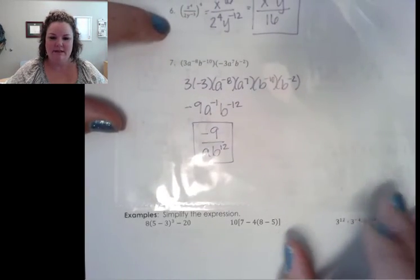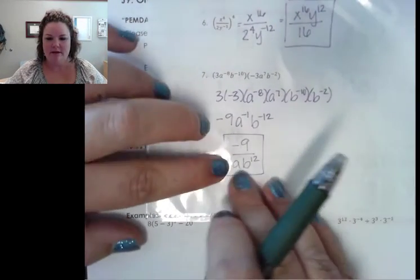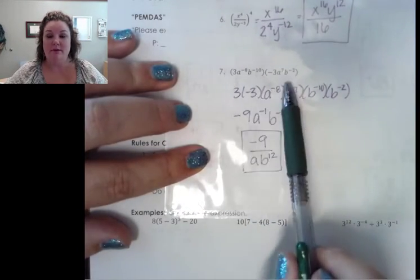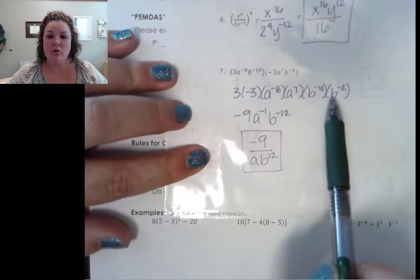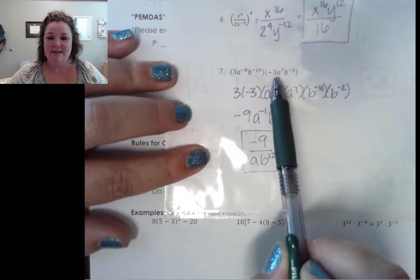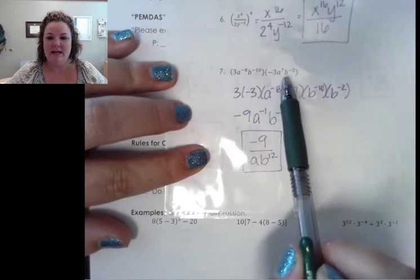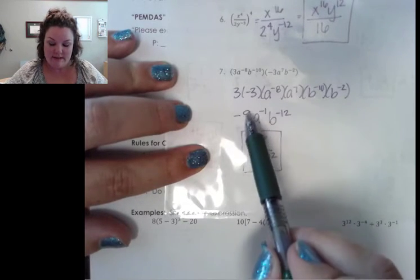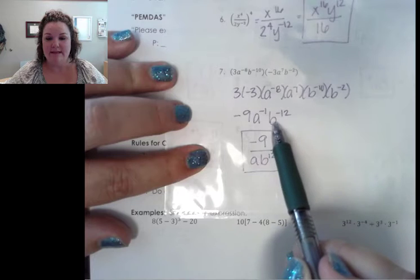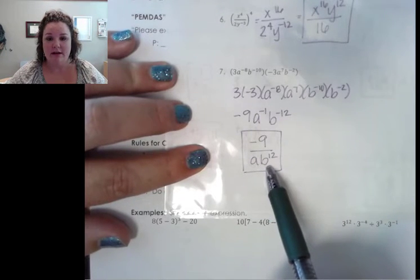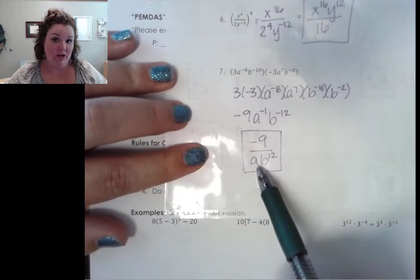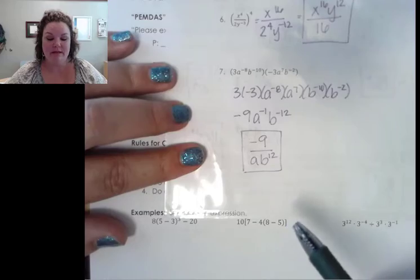Number 7: we just have two monomials being multiplied. 3 times negative 3 gives me negative 9. a to the negative 8th times a to the 7th leaves me with a to the negative 1. b to the negative 10 and b to the negative 2 gives me b to the negative 12. Notice: even though 9 is negative, it doesn't have a negative exponent, so negative 9 stays on top. My two variable bases have negative exponents, so we move those down to the denominator. When a to the negative 1 moves down, it becomes a to the positive 1, and we don't usually write the exponent when it's the first power, so we just write a. Then b to the 12th.